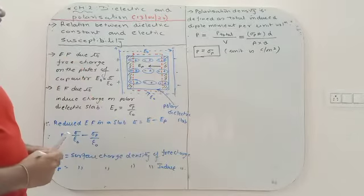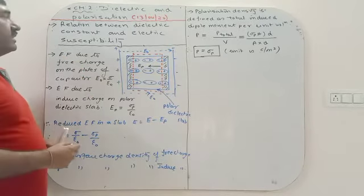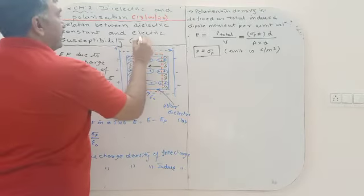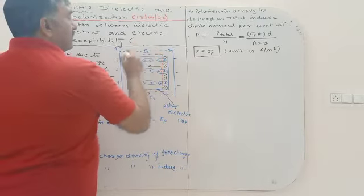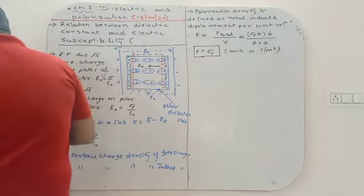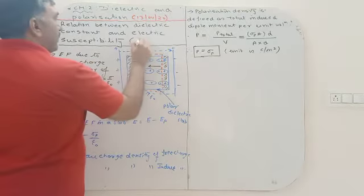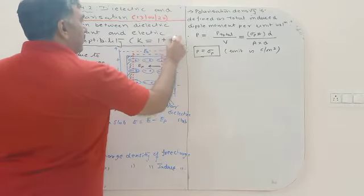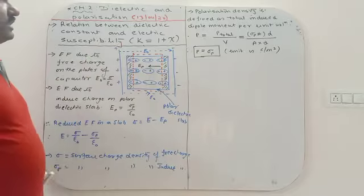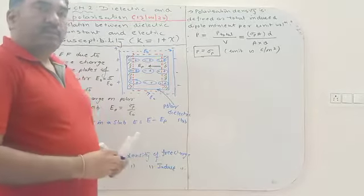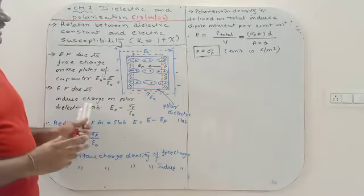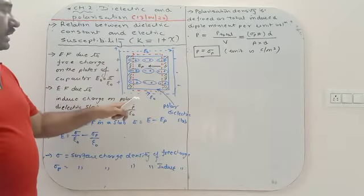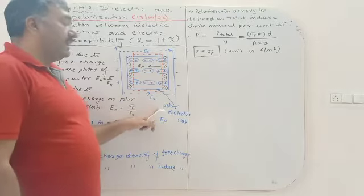In the next topic, we want to derive a very important relation between dielectric constant K and susceptibility χ, that is K = 1 + χ. To develop this relation, we consider two parallel plates of a capacitor with a polar dielectric slab placed between them, separated by distance D.